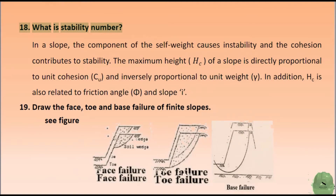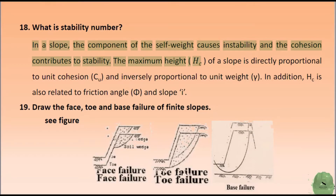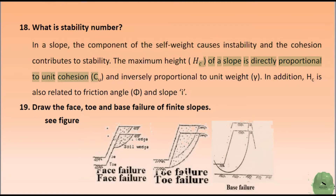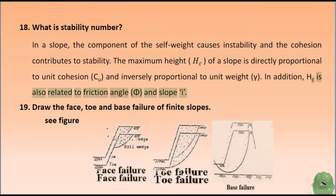What is stability number? In a slope, the component of the self-weight causes instability and the cohesion contributes to stability. The maximum height of a slope is directly proportional to unit cohesion C and inversely proportional to unit weight. In addition, H/C is also related to friction angle F and slope angle I.